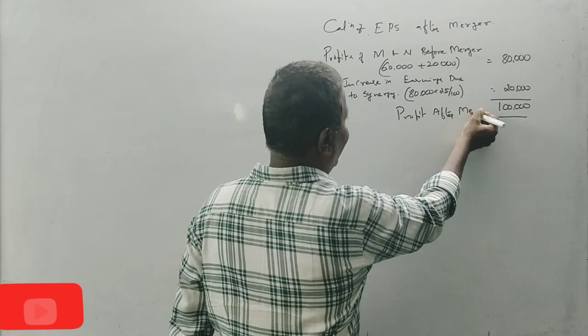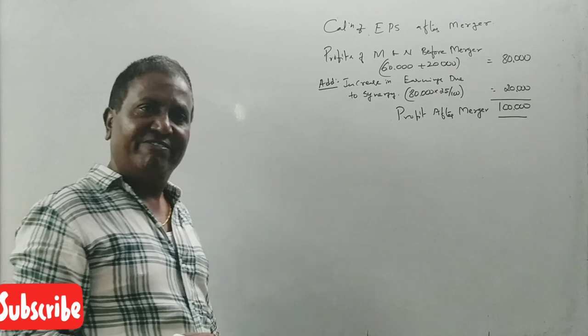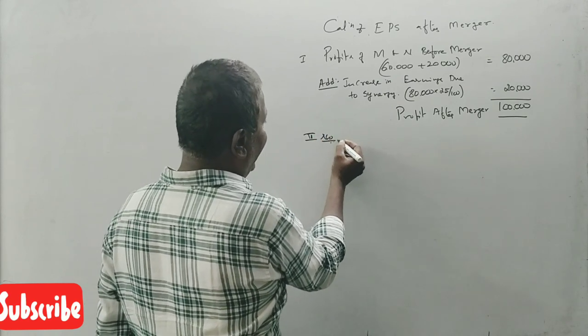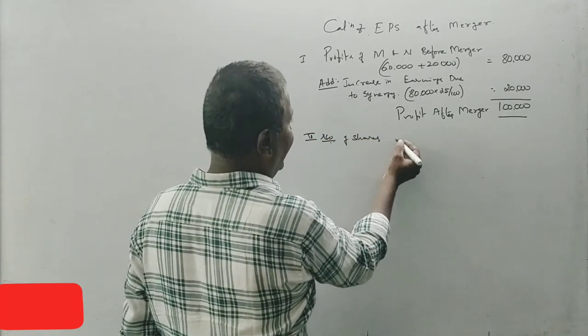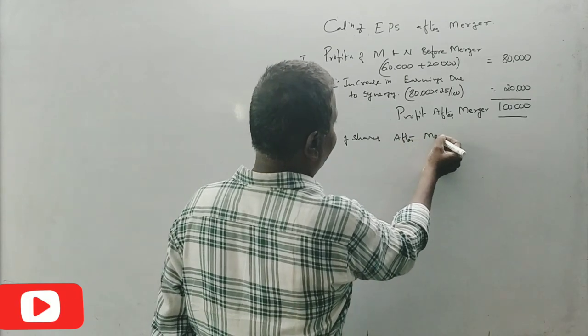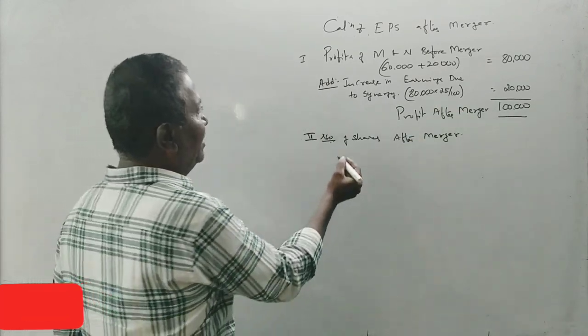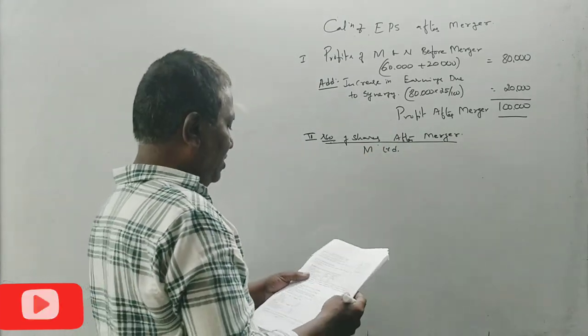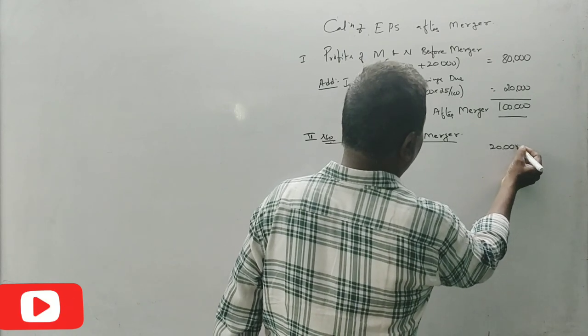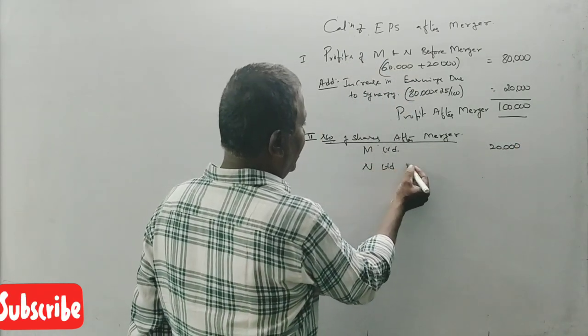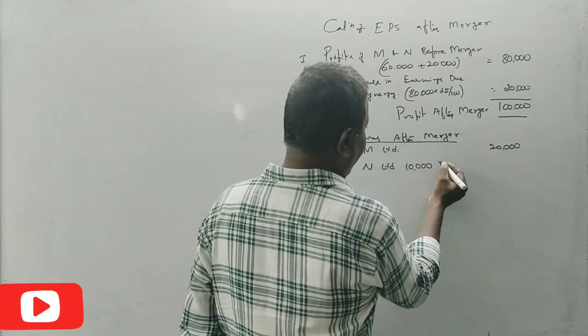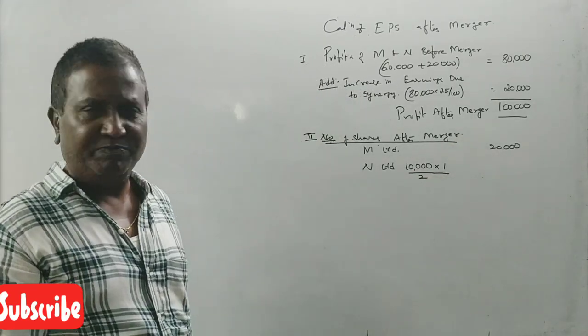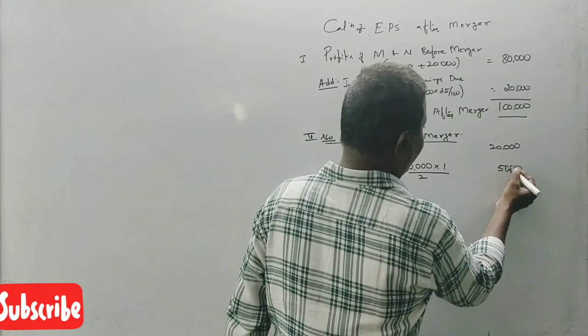Next, second point: number of shares after merger. M limited has 20,000 shares. N company has 10,000 shares, but exchange ratio is for every two shares in N, one share in M is given. So two shares become one share. After merger, number of shares: 25,000 shares.